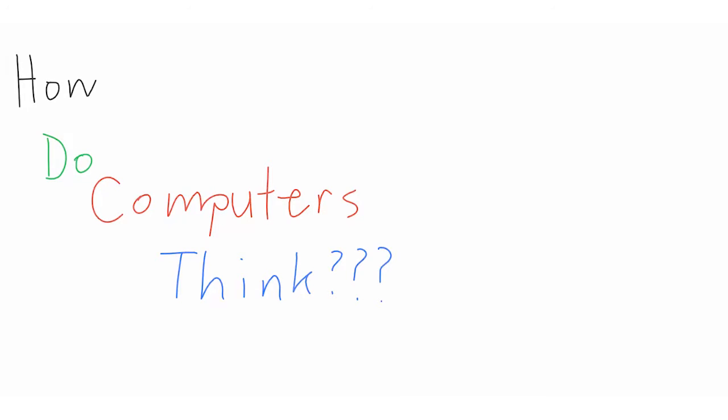How do computers think? We've discussed in other videos that computers simply take information in the forms of 1 and 0. However, we did not discuss how computers can process and manipulate that information.